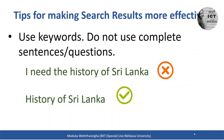The first tip is: use keywords. Do not use complete sentences or questions when you are searching. For example, if you need to find information about the history of Sri Lanka, don't type 'I need to find the history of Sri Lanka.' You should search using just the keyword: history of Sri Lanka.